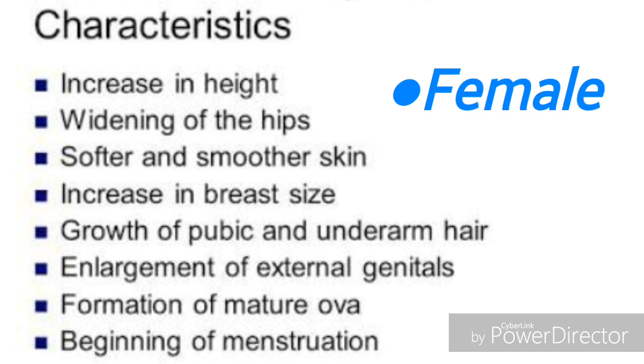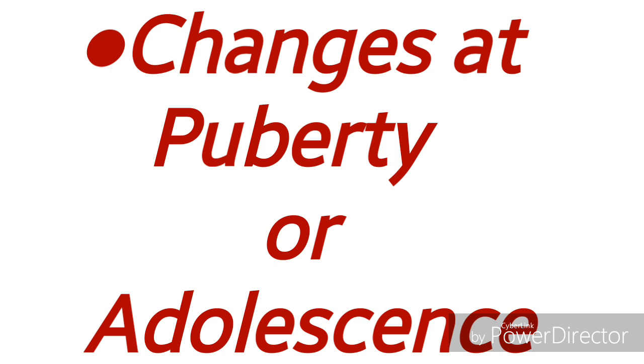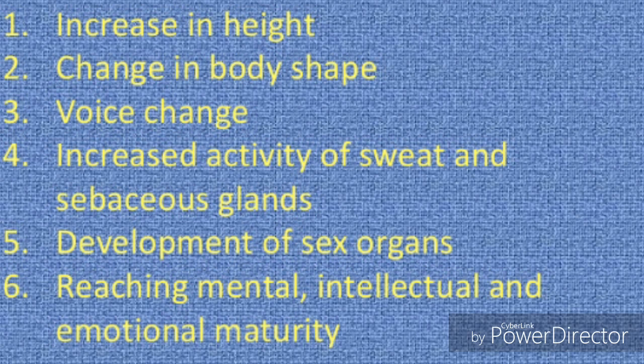Now let us learn about some changes that take place at puberty or adolescence. These include: increase in height, change in body shape, voice change, increased activity of sweat and sebaceous glands — sebaceous glands are oil-secreting glands present in the skin — and development of sex organs.